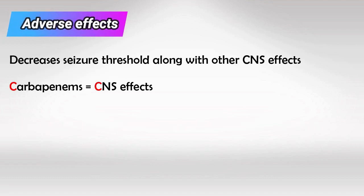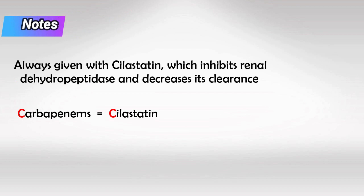Carbapenems have mainly CNS side effects like headache, confusion, and disorientation, but mainly they will decrease the threshold for seizures and cause seizures. We can inhibit the renal clearance of carbapenems by using cilastatin.